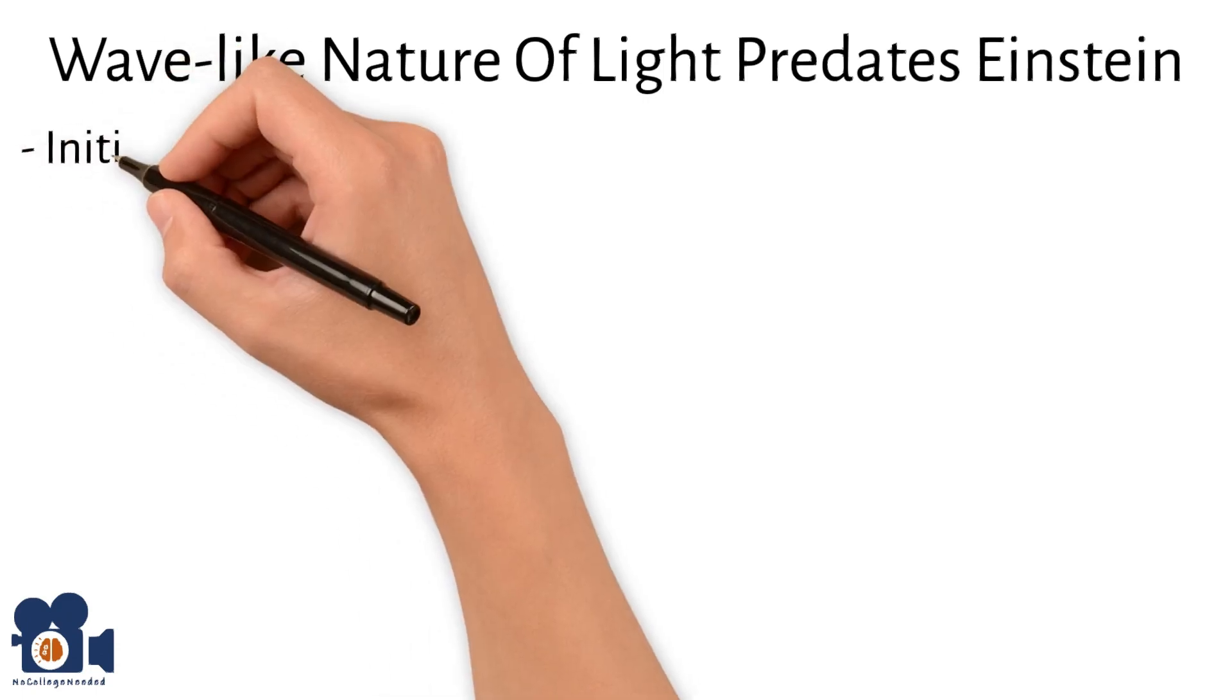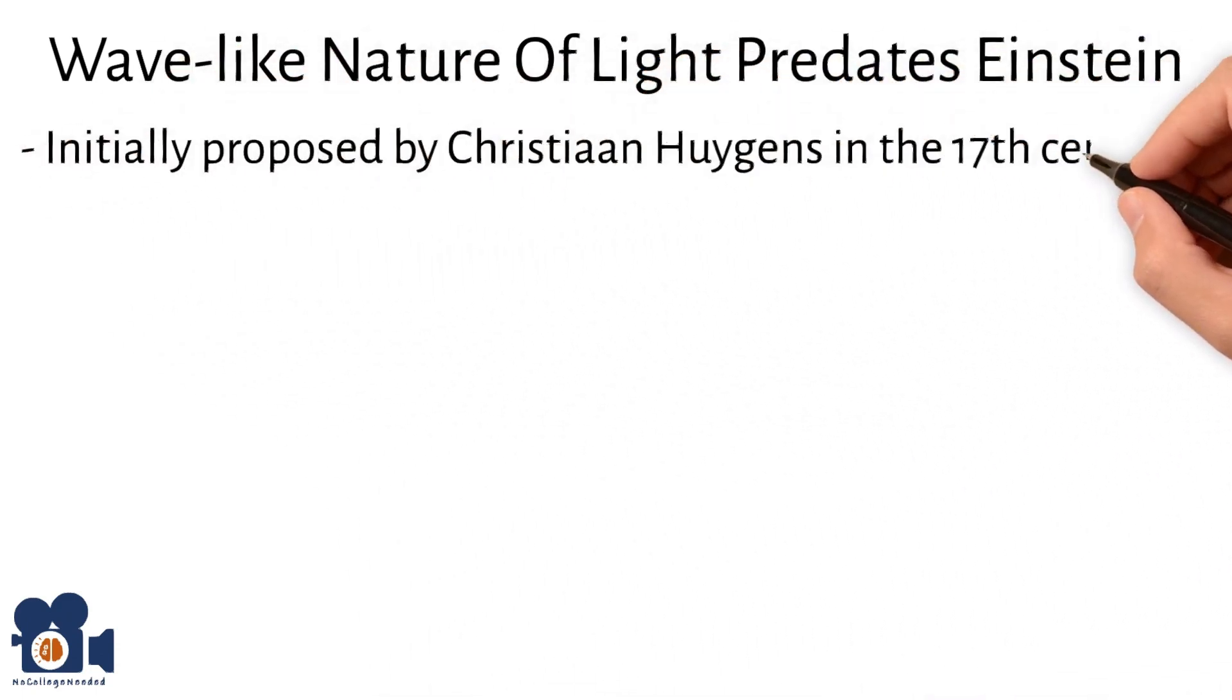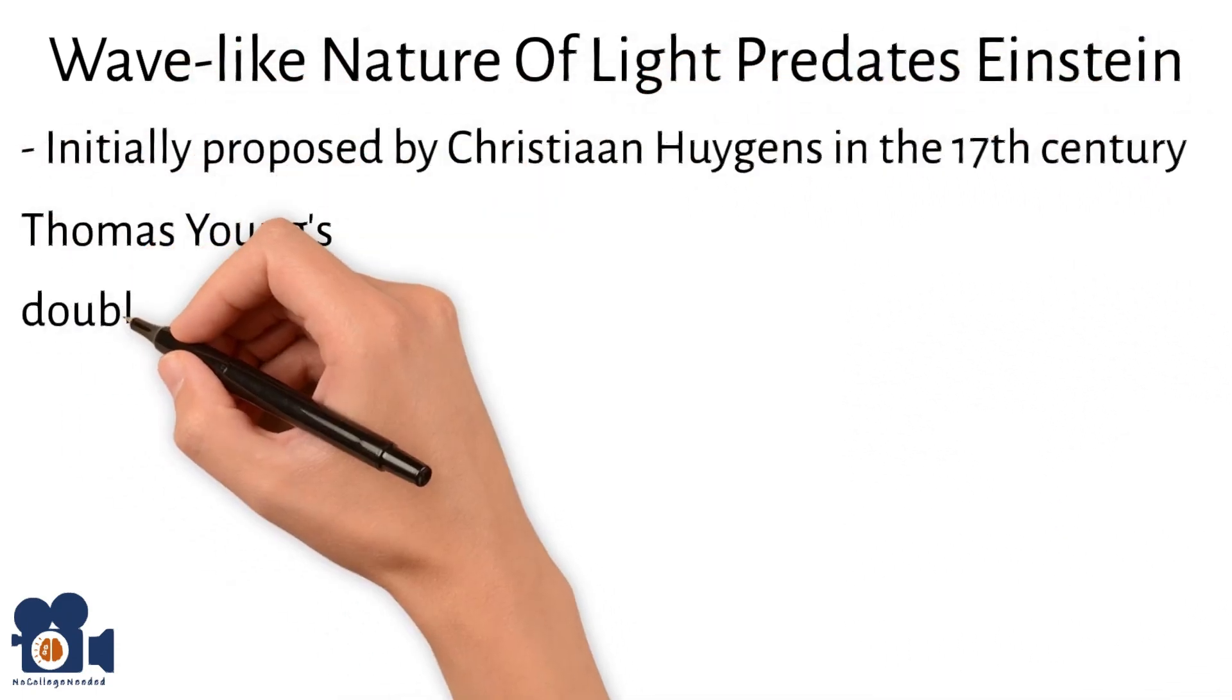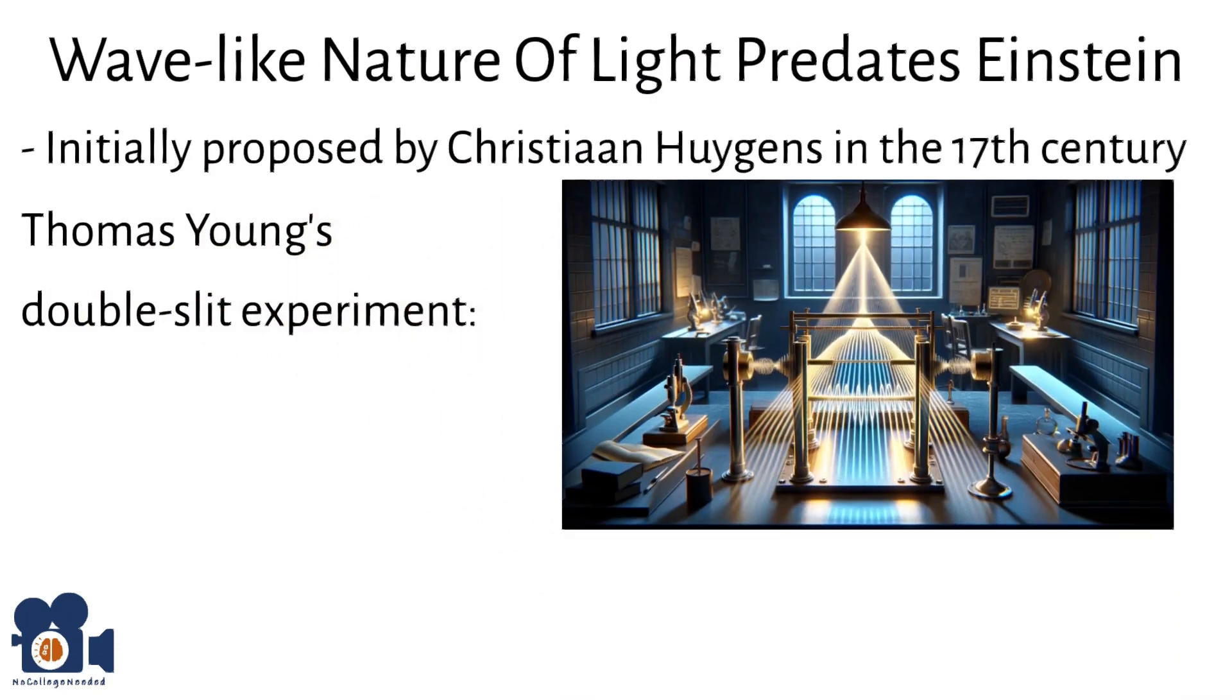The discovery of the wave-like nature of light predates Einstein and was initially proposed by Christian Huygens in the 17th century, but it was Thomas Young's double-slit experiment in the early 19th century that provided strong evidence for the wave nature of light.